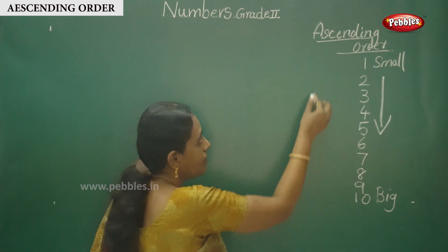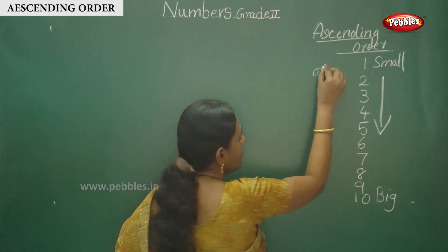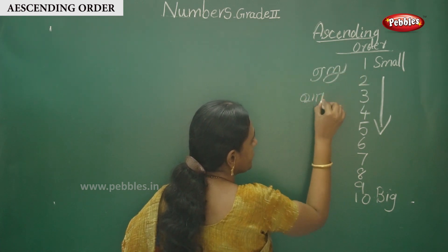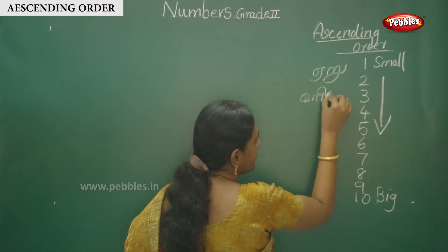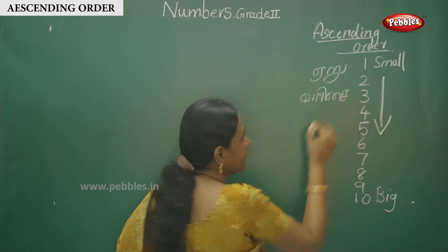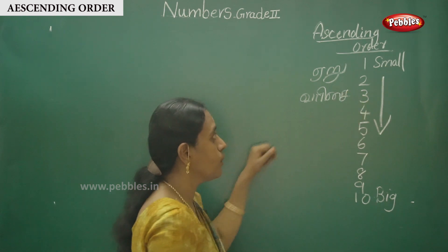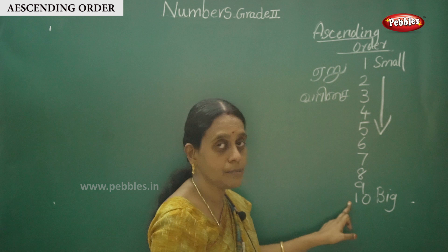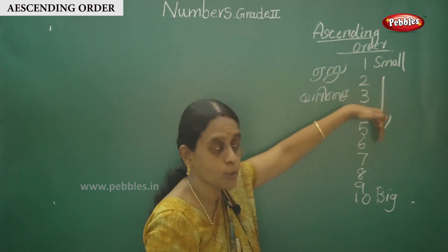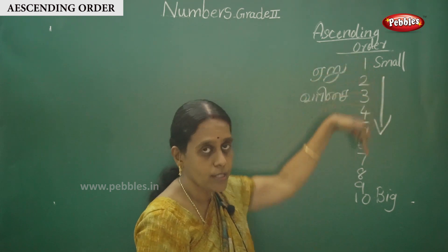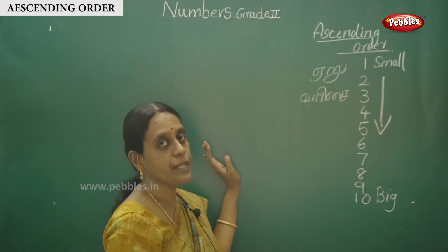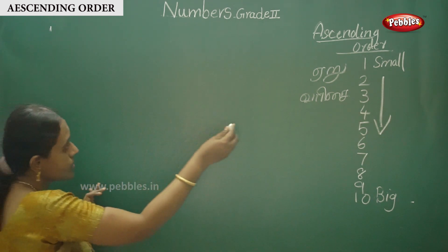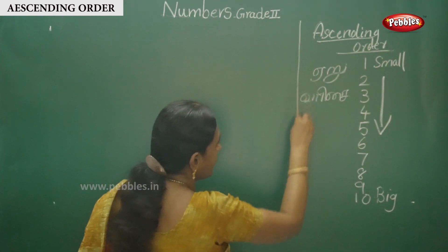Eru varisai — Tamil la di sallu vangu. Eru varisai il yedudhuk. Eru varisai means 1 is the chinna number, 10 is the big number. Arrange the numbers in that order. Eru varisai il yedudhu — okay, this is the concept. This is ascending order.